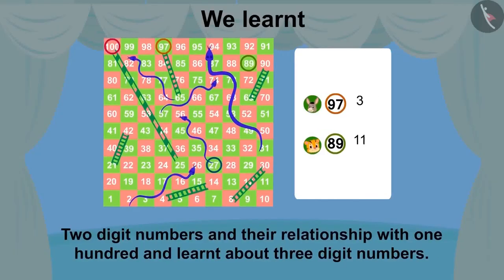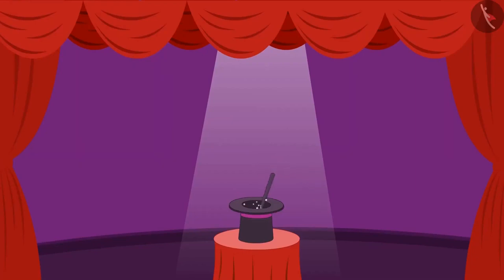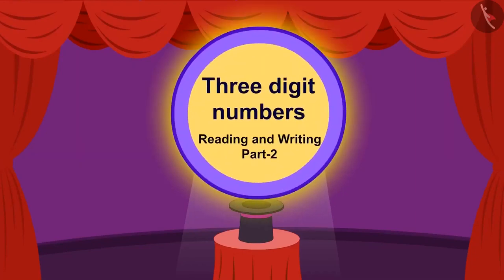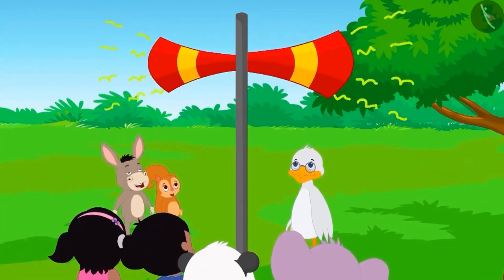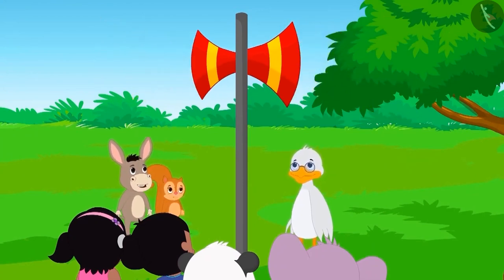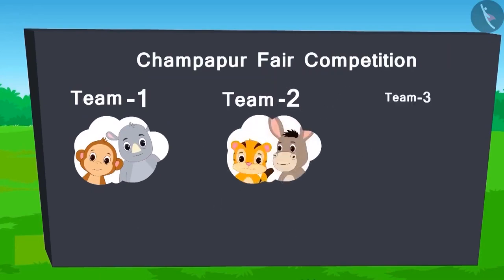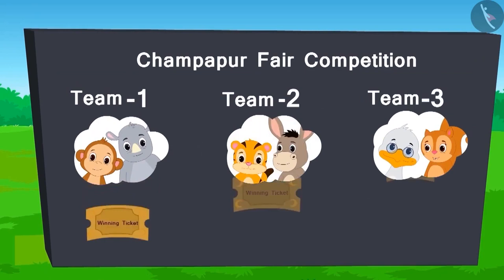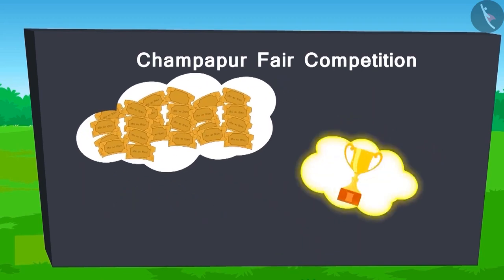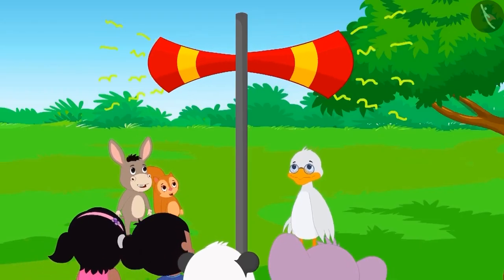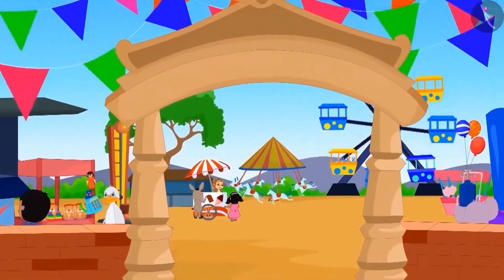In this video we will learn about 3-digit numbers. Listen! All the people of Champapur are hereby notified to participate in the competition at the fair. There will be 2 people in each team and 1 ticket will be presented upon winning each game. The team having maximum number of tickets in the end will win. Let's go to the Champapur fair.